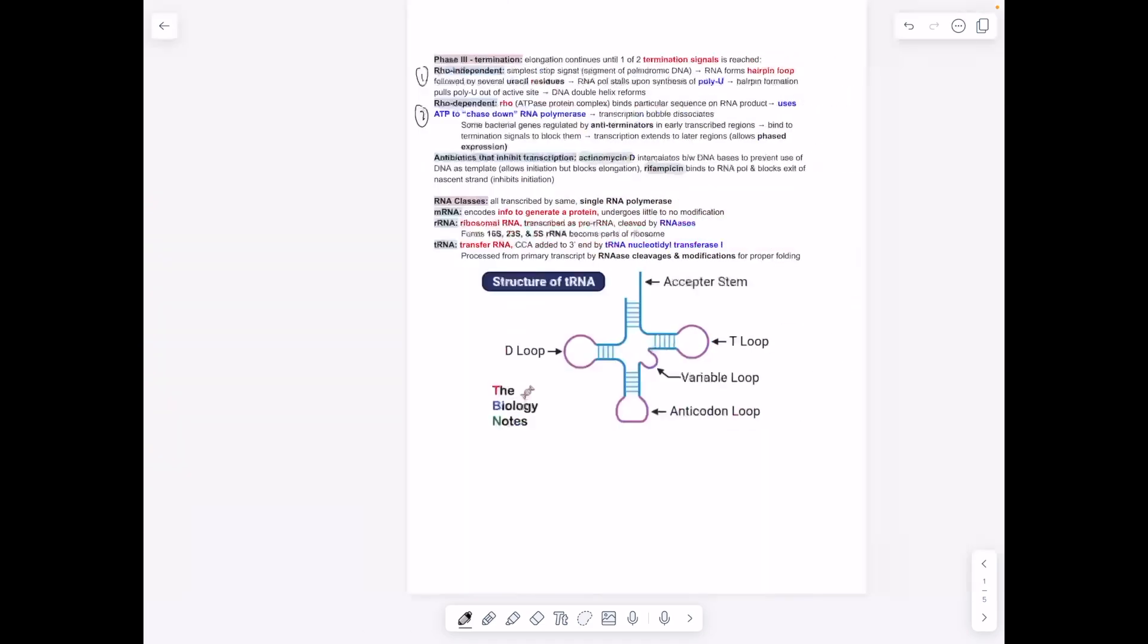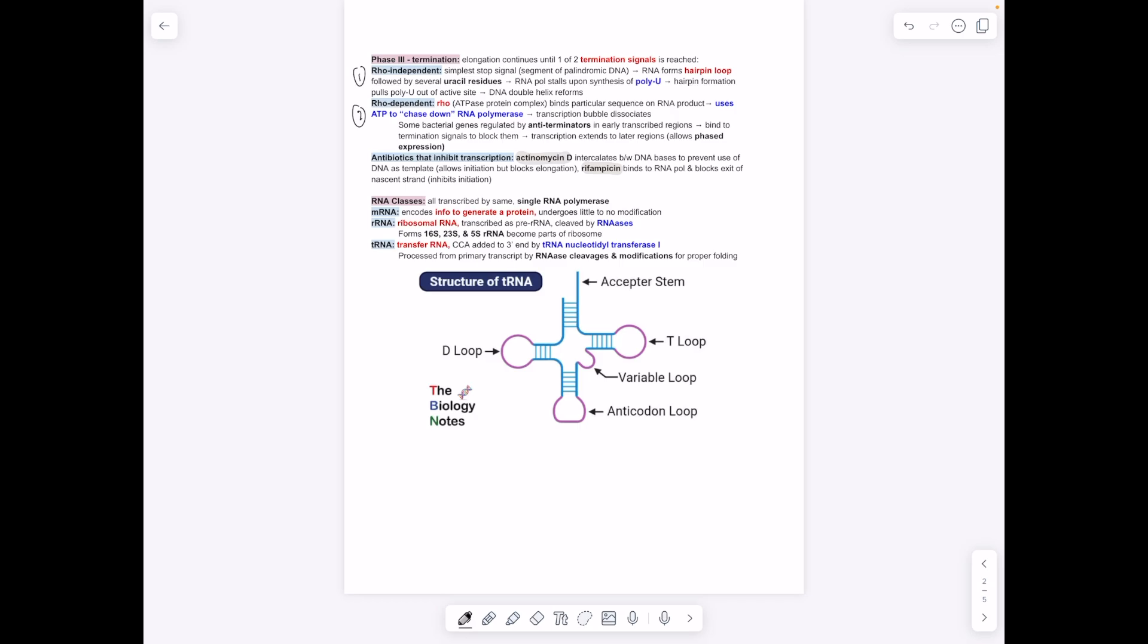In terms of elongation, you're just adding 5' to 3'. Termination—you have two main types of termination in prokaryotes: rho-dependent and rho-independent. Rho-dependent is basically you have this rho protein complex, which binds to the RNA that's being made, and it chases down the RNA polymerase and knocks it off, such that the RNA polymerase will no longer transcribe, so it terminates the transcription. Rho-independent, basically the RNA is going to form a hairpin loop, typically from a palindromic sequence, and that will cause the RNA polymerase to disconnect due to its weird shape. Antibiotics that inhibit transcription: actinomycin D prevents using DNA as a template, and rifampicin binds to RNA polymerase and blocks exit of the nascent strand, so inhibits initiation.